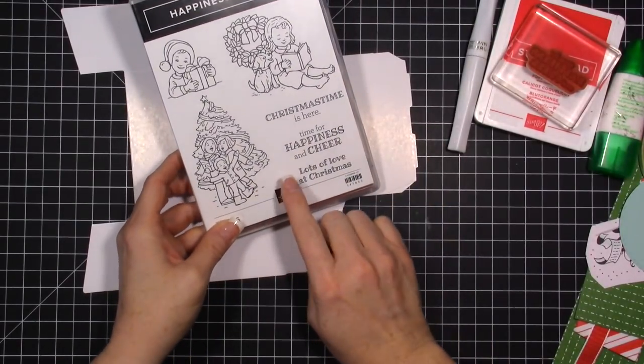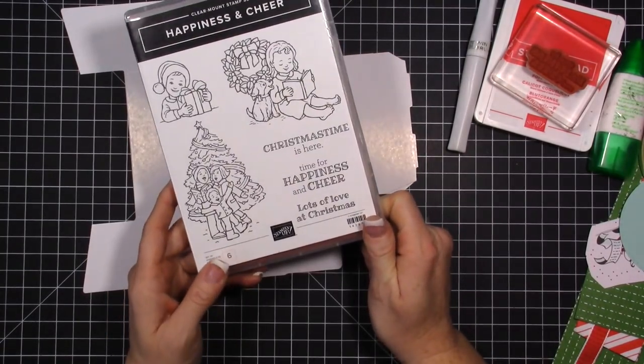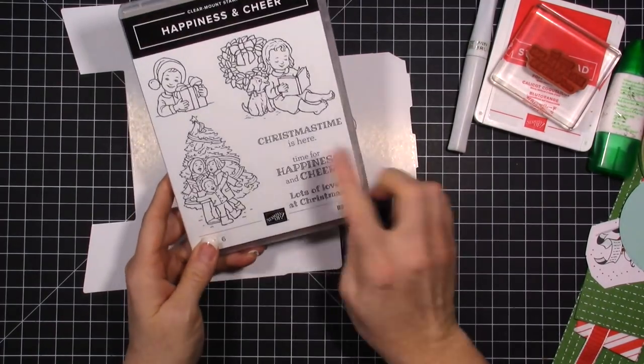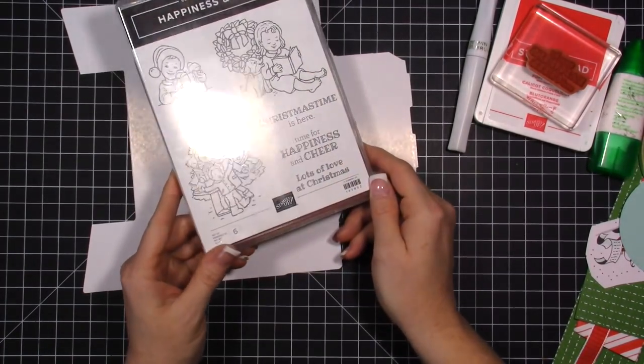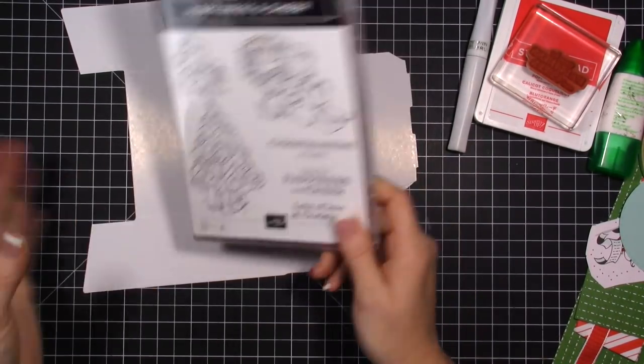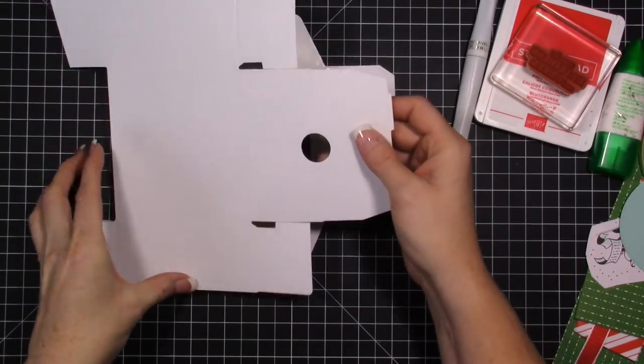It's going to be simple and I know you're going to enjoy it. We're going to use the Happiness is Cheer stamp set. The only reason I got this stamp set was really for the sentiments, which I know is a little bit sad because the images are really cute. They just required coloring and you guys know I don't love coloring. So we're going to use the sentiments off that.